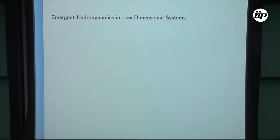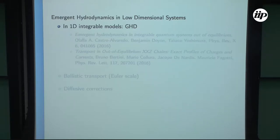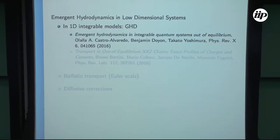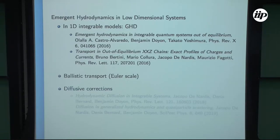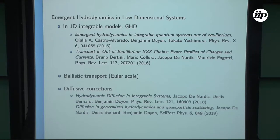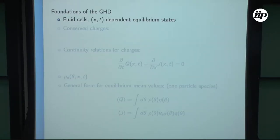Let me give a very quick introduction — you all know this. We are talking about one-dimensional integrable models. We have the theory of generalized hydrodynamics, started in these two papers mentioned many times at this conference. This theory can describe ballistic transport at the Euler scale, but we also heard in the last talk by Jacopo that it can describe diffusive corrections. The theory was given in these two papers.